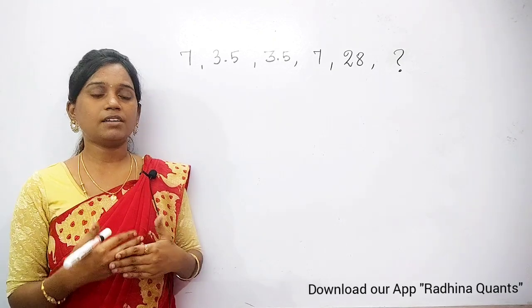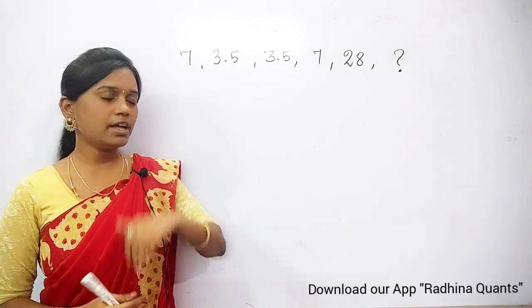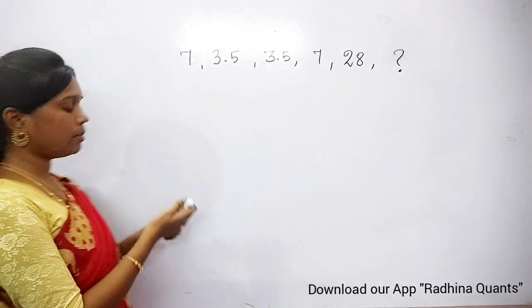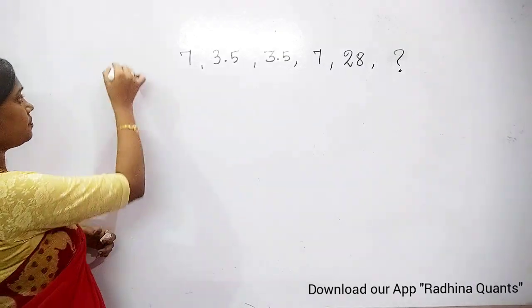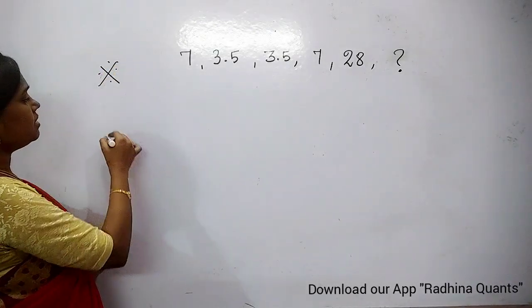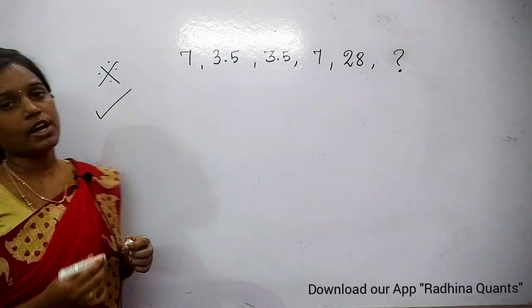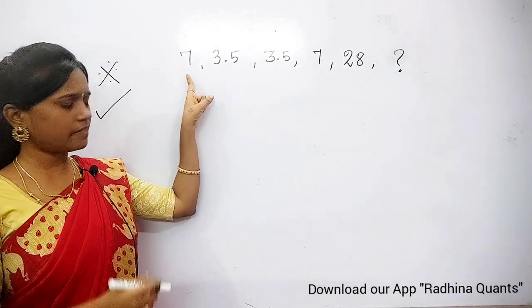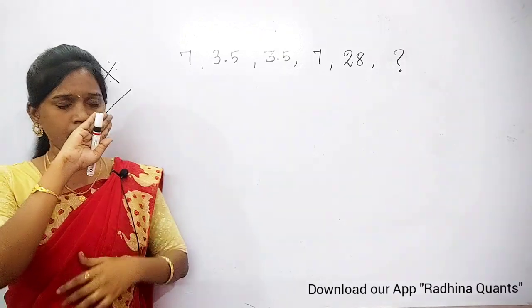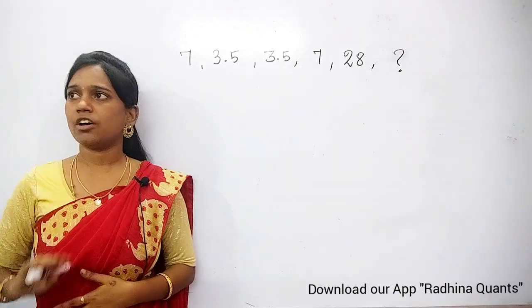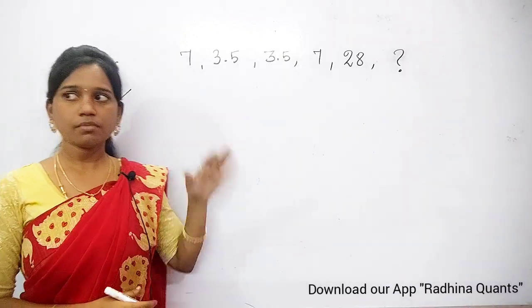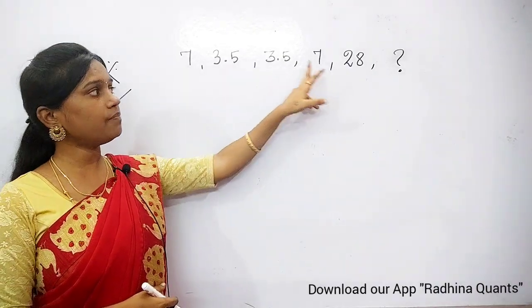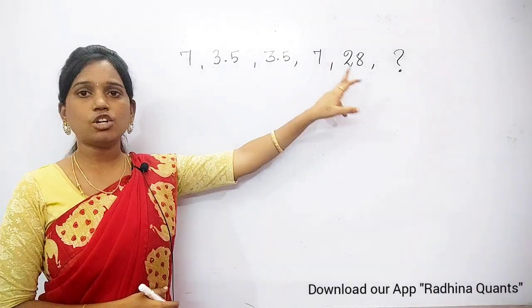So let us know the basics of the number series. We will approach the question directly. This is a very interesting pattern. For number series, this is the tick method. Tick method — how many numbers do you know? 7, 3.5, 3.5, 7, 28.